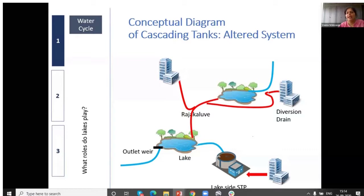A third kind of common intervention is a lakeside STP, like at Jakkur lake. They manage to put an underground sewage system in one or two or three wards, ensuring all sewage that was going into the drain is now diverted to an STP. With no raw sewage in the main drain, the STP's treated water is then put into the lake. These are the main ways in which the system has been altered.